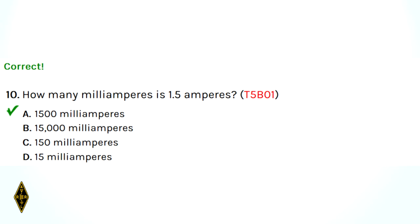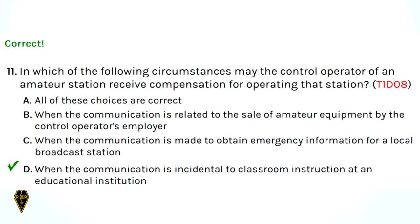Question 10: how many milliamperes is 1.5 amperes? Milli is the metric prefix for one-thousandth, so there are 1,500 milliamperes in 1.5 amperes. Question 11: in which circumstances may the control operator of an amateur station receive compensation for operating? When the communication is incidental to classroom instruction at an educational institution — think of the high school physics teacher. 11D.